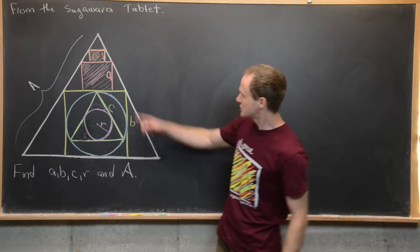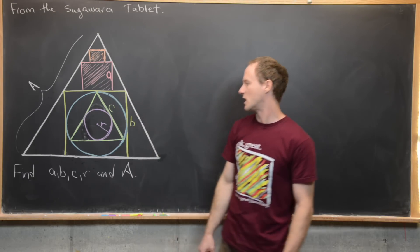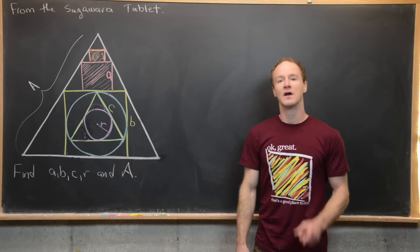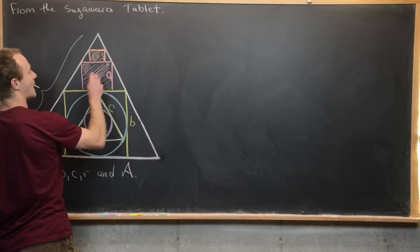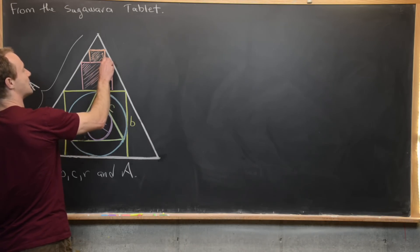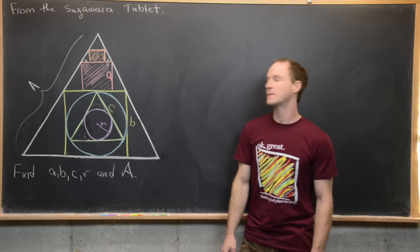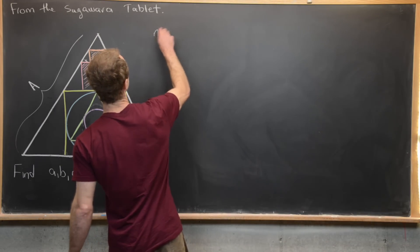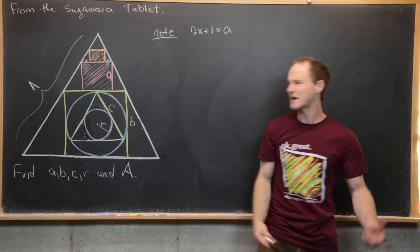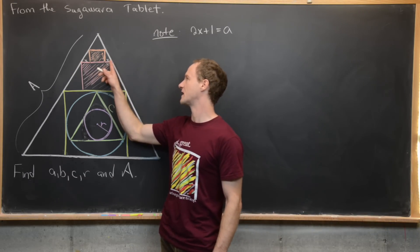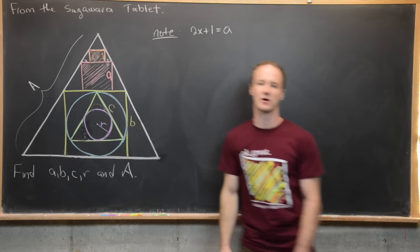So let's get to it. I'll find little a, little b, A, and then work on C and R at the same time. The first thing I want to do is introduce a new length X — that's the little bit that hangs off the side of our small square. Notice that 2X plus 1 equals a, because going across that length we can measure it as X plus 1 plus X, or all the way across as a.